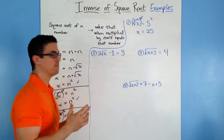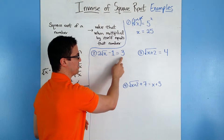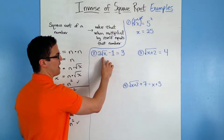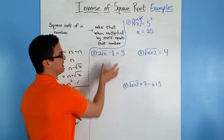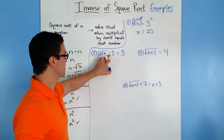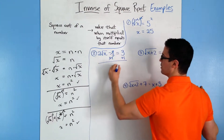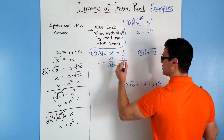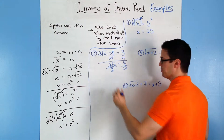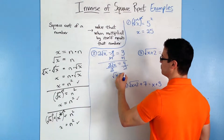Number one is kind of an easier one. Number two, this time we're doing some multiple times the square root minus some number equals some other number. We're going to simplify it so it's just the square root of x by itself. The easiest one to get rid of first is the minus 1, so I'm going to add 1 to both sides. The 1's cancel and you get 2 times the square root of x is equal to 4. To get rid of this 2, since it's multiplied, I'll divide both sides by 2. The 2's cancel.